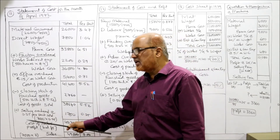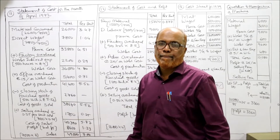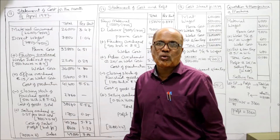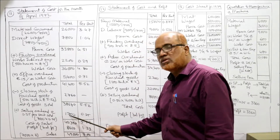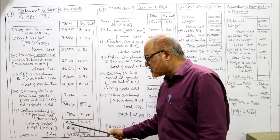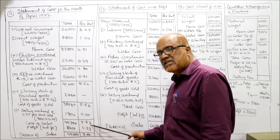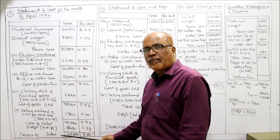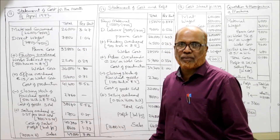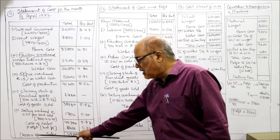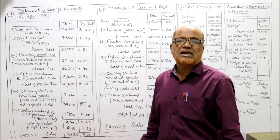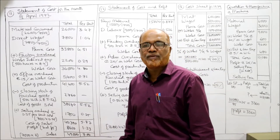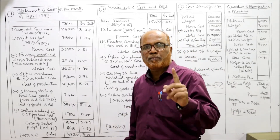Selling overhead is 0.25 per unit sold. 7,000 units were sold, so total selling overhead = 7,000 × 0.25 = 1,750. Cost of sales = 40,390 at 5.77 per unit. Sales: 7,000 units × 7 rupees = 49,000 total, 7 rupees per unit. Profit = 49,000 − 40,390 = 8,610 total, and 7 − 5.77 = 1.23 profit per unit.